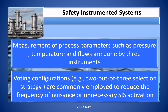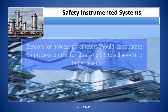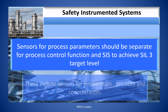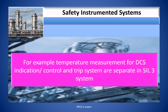Two-out-of-three selection strategies are commonly employed to reduce the frequency of unnecessary or nuisance SIS activations. Sensors for process parameters should be separate for process control functions and SIS to achieve the SIL 3 target level. This includes sensors for temperature, pressure, and concentration. For example, temperature transmitters for DCS indication or control and the TRIP system are separate in a SIL 3 system.